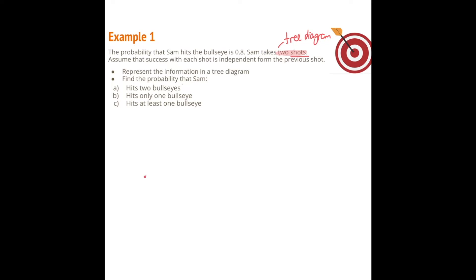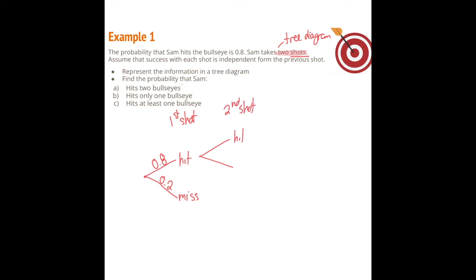Each shot represents one branch. Starting from the beginning, on the first shot Sam can either hit the bullseye or miss. Probabilities always go on the branches: the probability of hitting is 0.8 and the probability of missing is 0.2, since the two must add up to one. Regardless of the first shot, he has a second shot with the same possible outcomes. Outcomes go at the end of the branch and probabilities go on the branch itself.